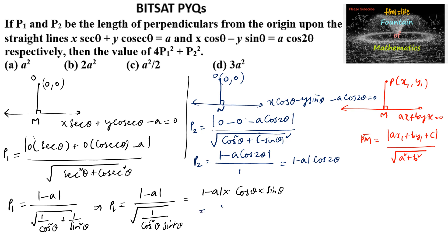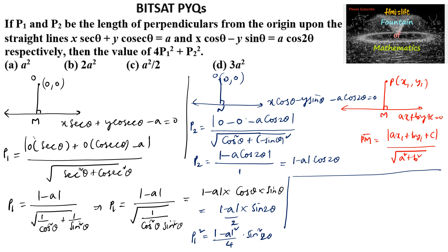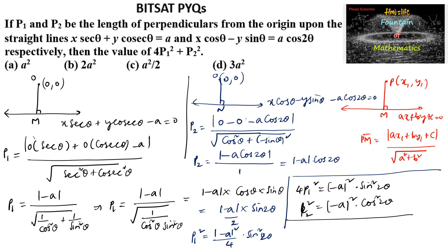We can rewrite p1 = |−a| · (sin2θ / 2), since 2·cosθ·sinθ = sin2θ. So 4p1² = a²·sin²2θ, and p2² = a²·cos²2θ. Adding both: 4p1² + p2² = a²·(sin²2θ + cos²2θ) = a², which is option A.